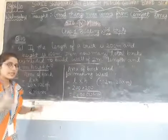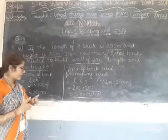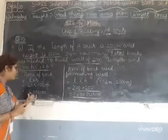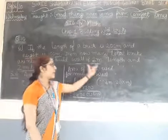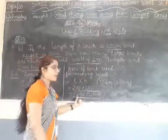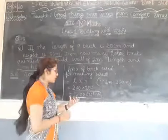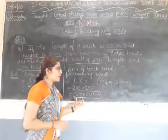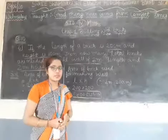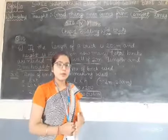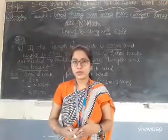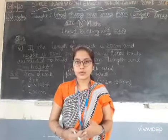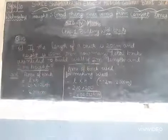One brick occupies 200 cm² of space. Now we will find the number of bricks by dividing the area of the wall by the area of one brick to get how many bricks are needed to fill the wall.